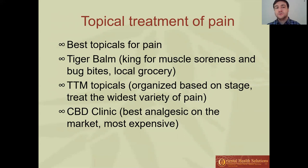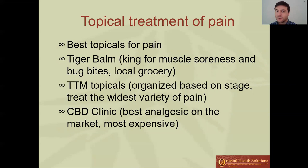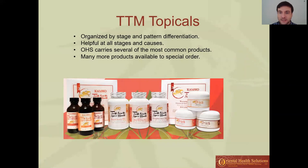The Tooth from the Tiger's Mouth topicals are from the author of that book — he worked with a company to produce many of the topicals described in the book, and they work really great. CBD Clinic is the best analgesic on the market that I've found — it works super well for pain from exercise, overuse, or middle to late stage injuries. It's extremely expensive, as are many CBD products. It's basically the strongest tiger balm you can get, but it also has CBD in it.